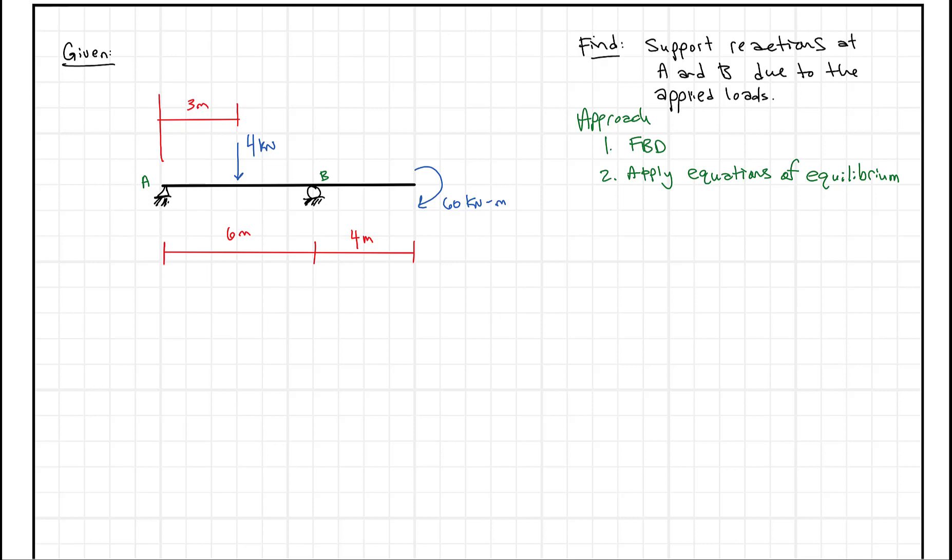So in this question, we're given a simply supported beam, but the difference here between this question and some of the other ones that we've done is this question has an applied moment at the end. So I want to go through this problem to show how the applied moment might impact our standard approach to finding reactions. So first we're going to draw a free body diagram, then we're going to apply our equations of equilibrium, and then we're going to solve.